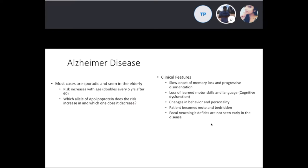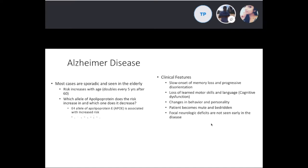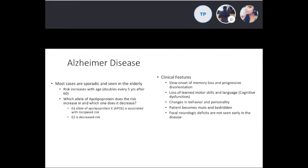The E4 allele of apolipoprotein E is associated with an increased risk of Alzheimer's disease, and E2 is associated with a decreased risk. A simple way to remember this: 4 is higher so the risk increases, and 2 is lower so the risk decreases.